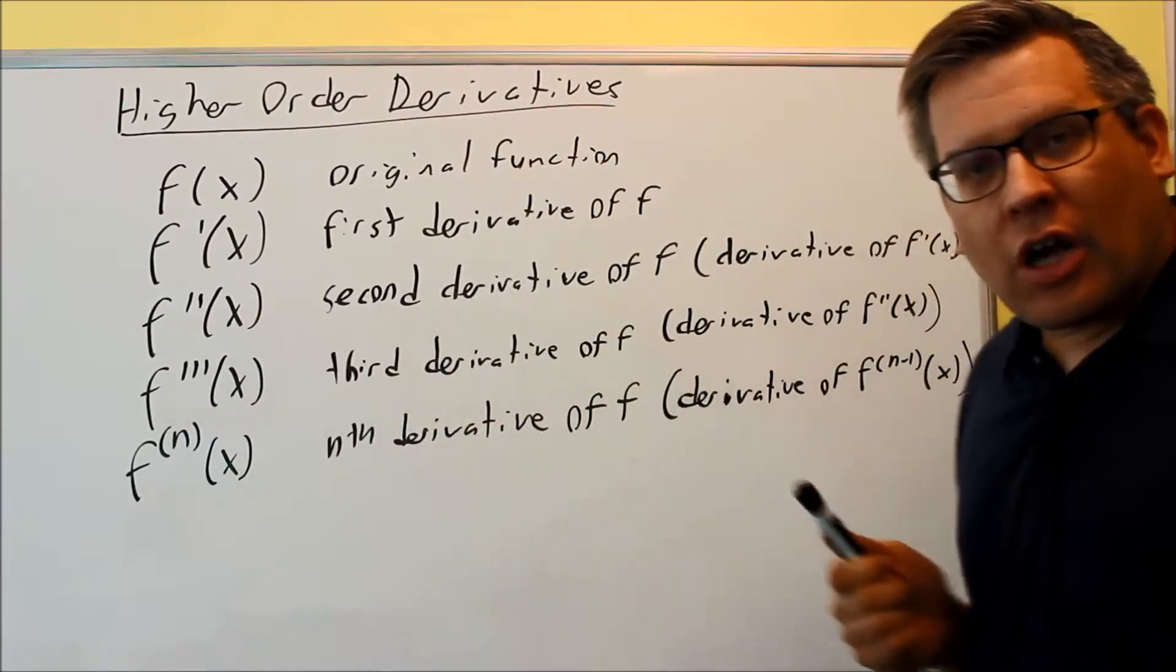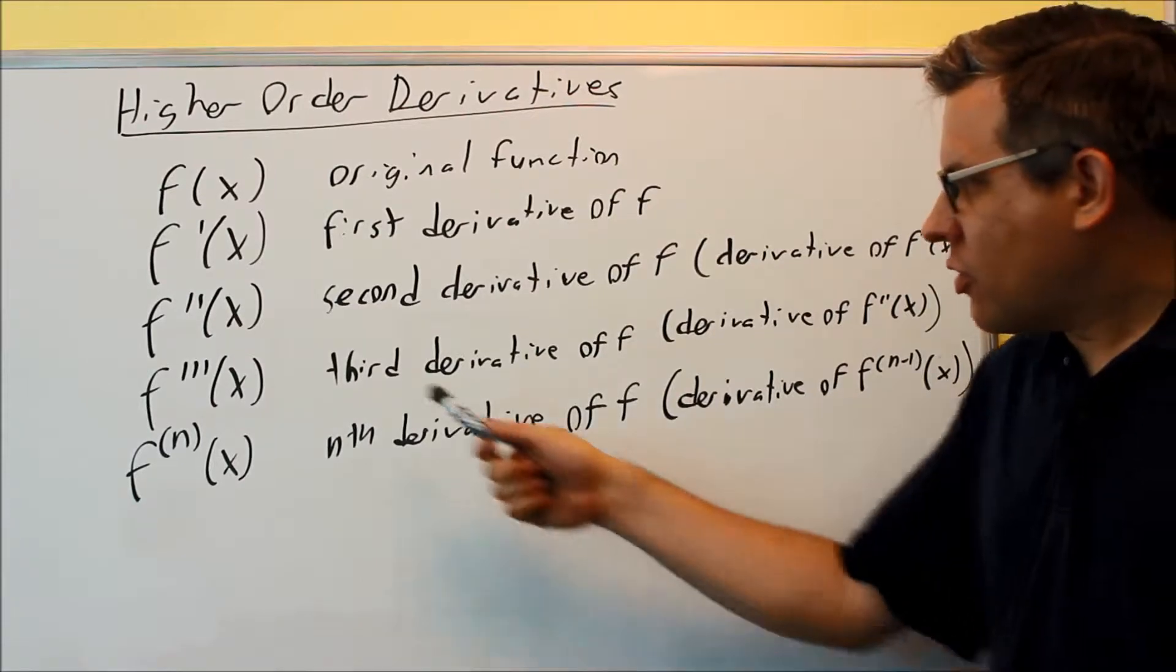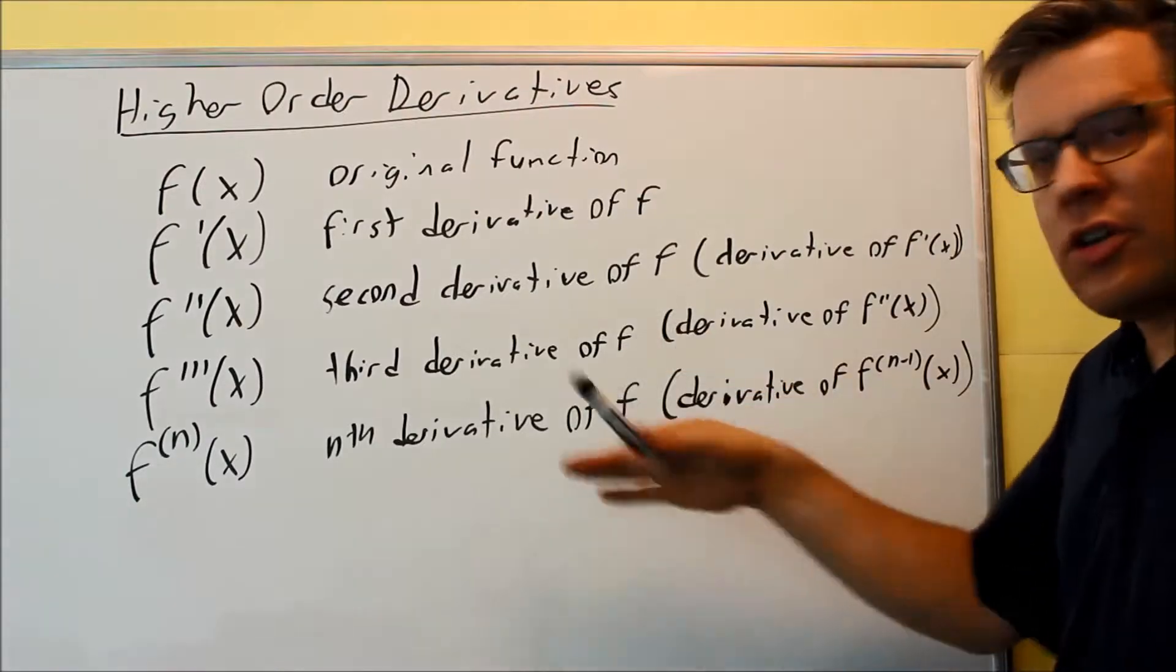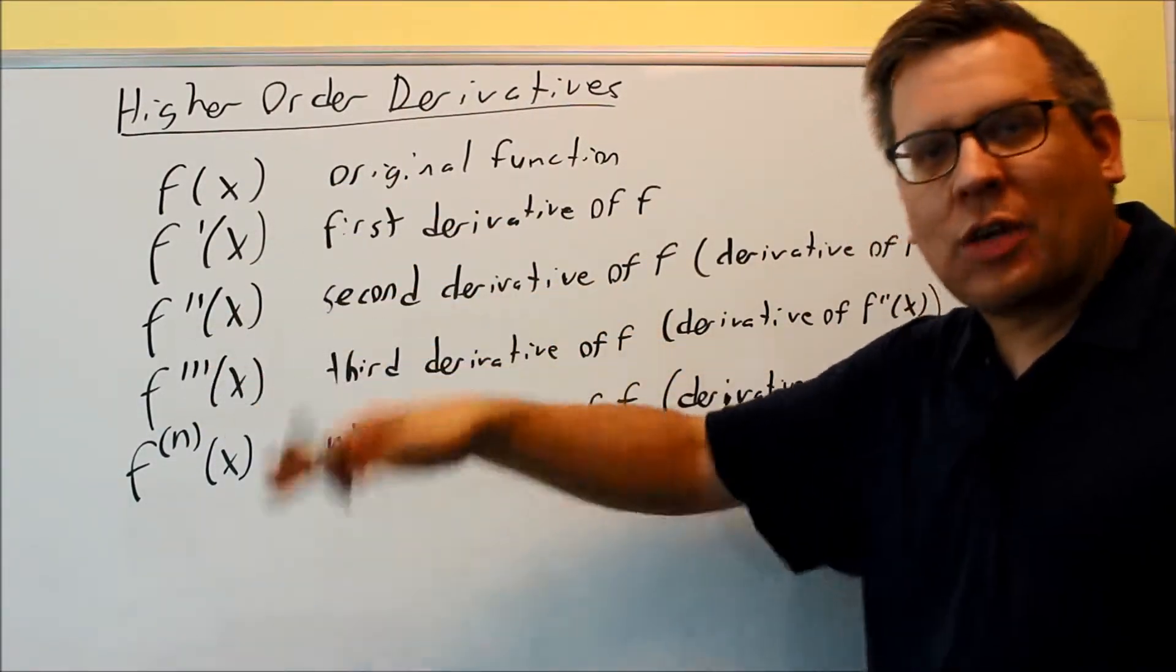And then we have the third derivative it could ask you for as well. This is going to be the derivative of the second one. So the third derivative of f is the derivative of this one here. And so on. You can keep on doing that, taking derivatives, derivative over derivative over derivative, keep on doing that all the way down.